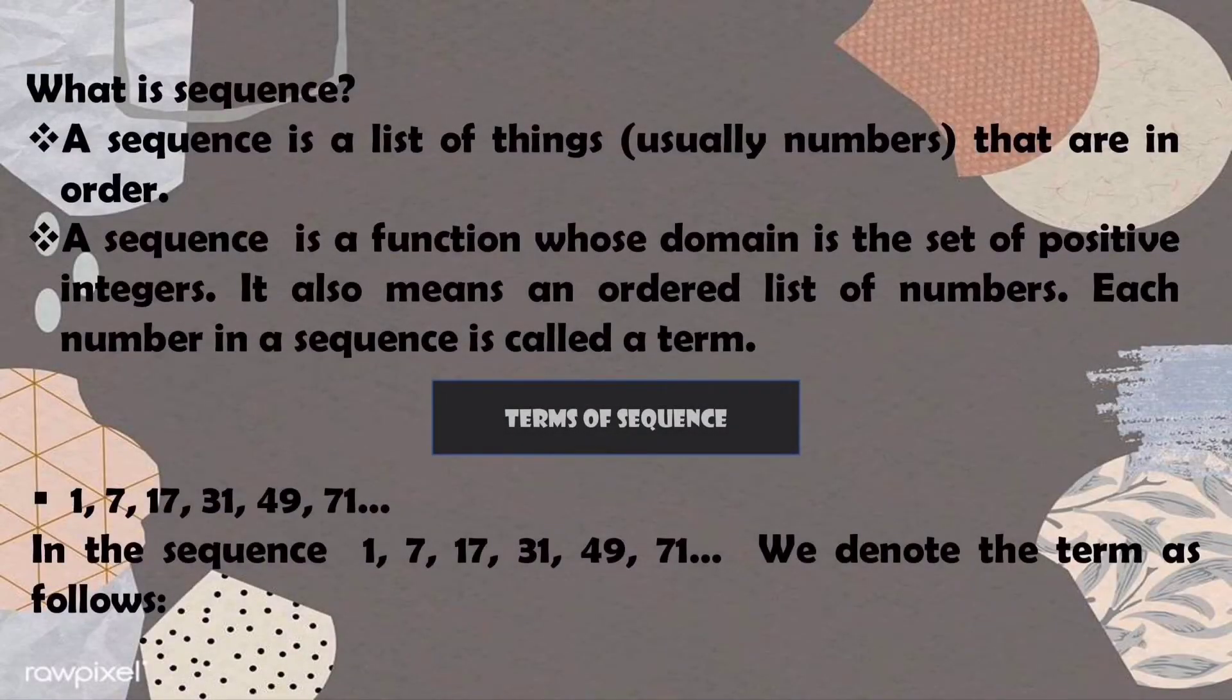So first, let us know what is sequence. A sequence is a list of things, usually numbers, that are in order. In math, a sequence is a function whose domain is the set of positive integers. It also means an ordered list of numbers. Each number in a sequence is called a term.